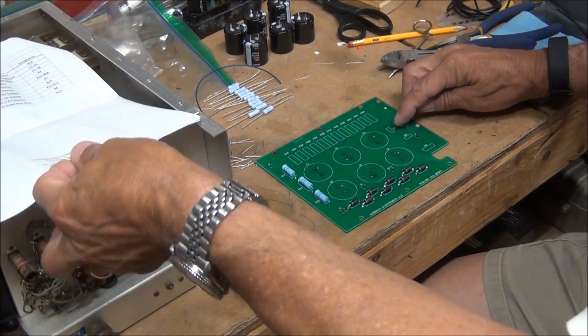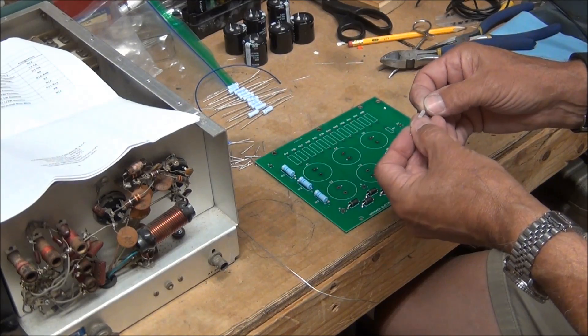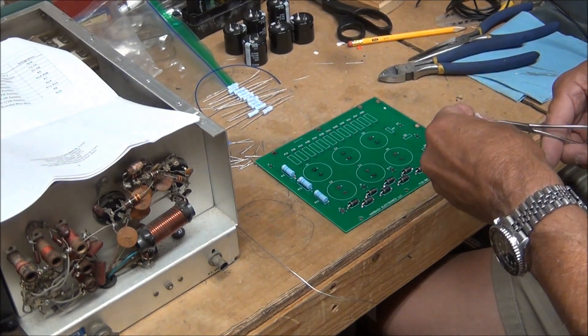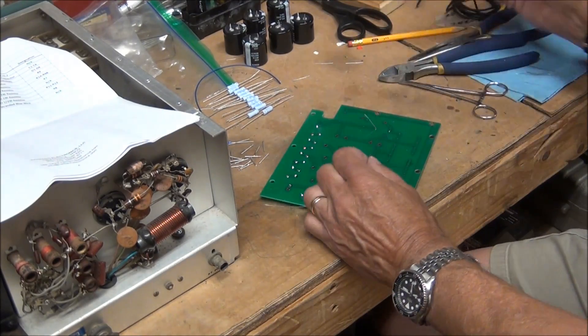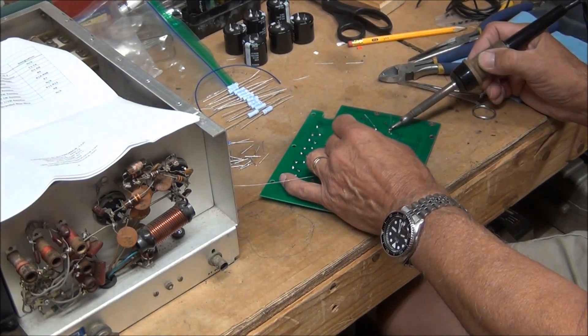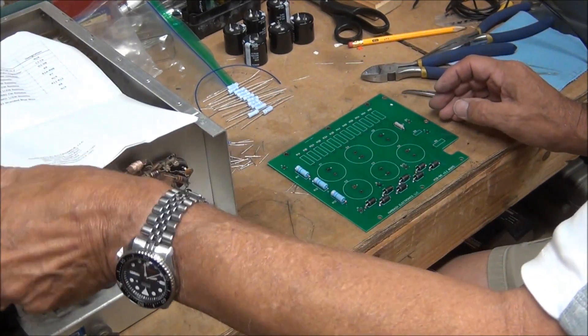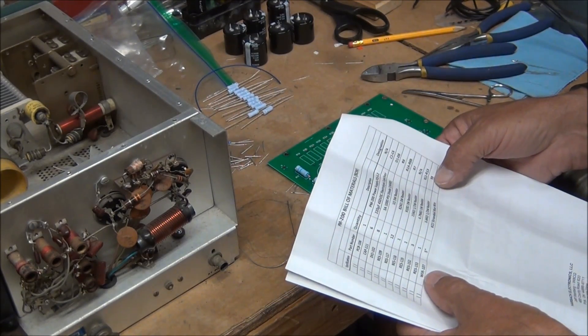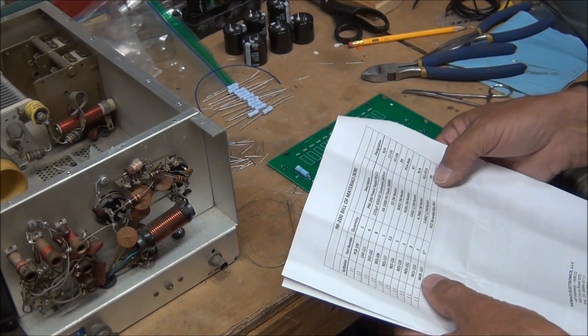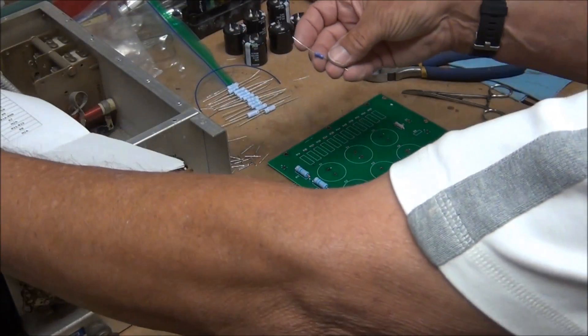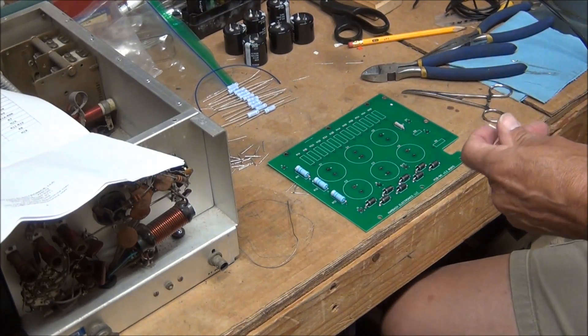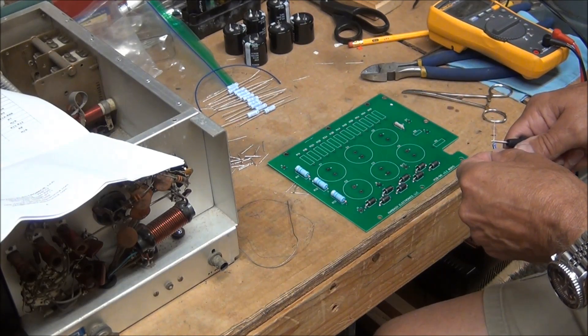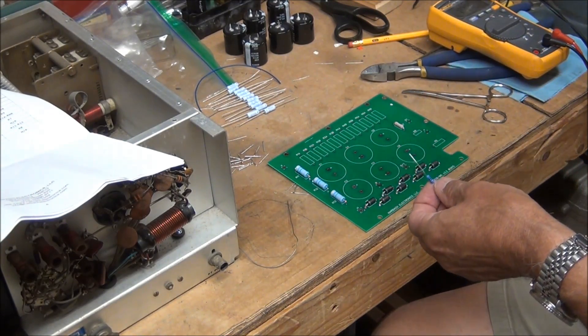Next resistor I'm going to solder on here is R7 which is a 910 ohm resistor, and this one is marked right on at 910 ohms. Let's do R8, 3.6k ohms. That should be this one. Let's double check, let's check with the meter just to be absolutely sure. And that's it.